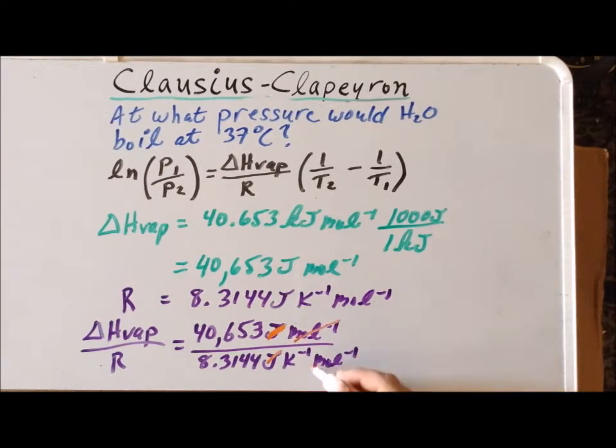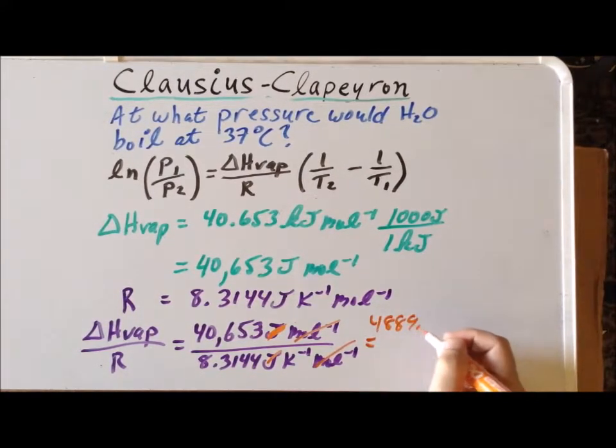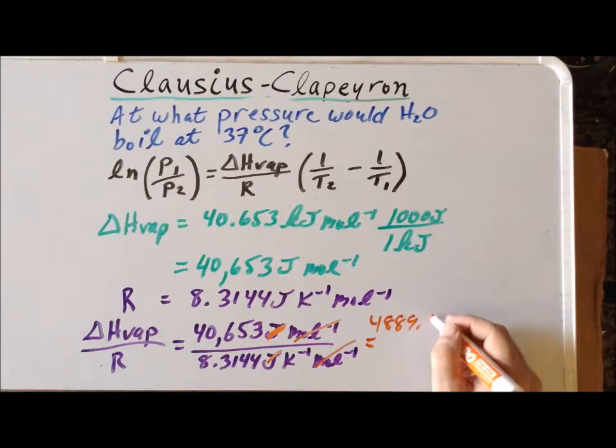We notice that the units of joules cancel and that the units of inverse moles cancel. That gives us a result of 4,889.47 Kelvin.